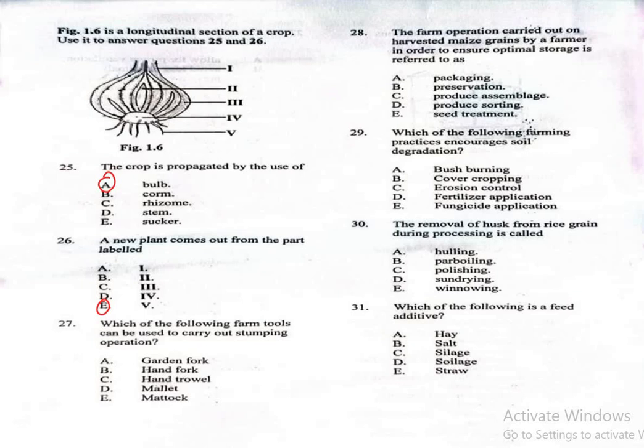Question 27. Which of the following farm tools can be used to carry out stumping operation? A. Garden fork, B. Hand fork, C. Hand trowel, D. Mallet, E. Mattock. The correct answer is Mattock, which is option E.